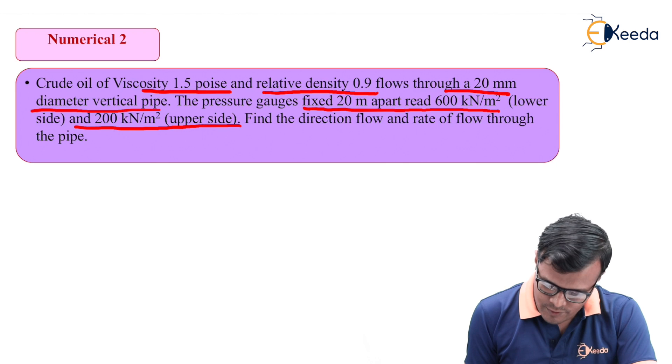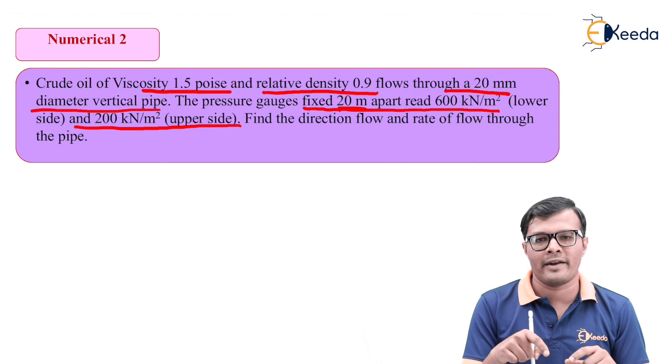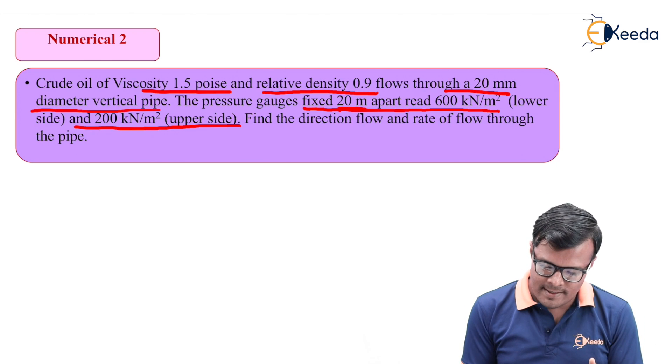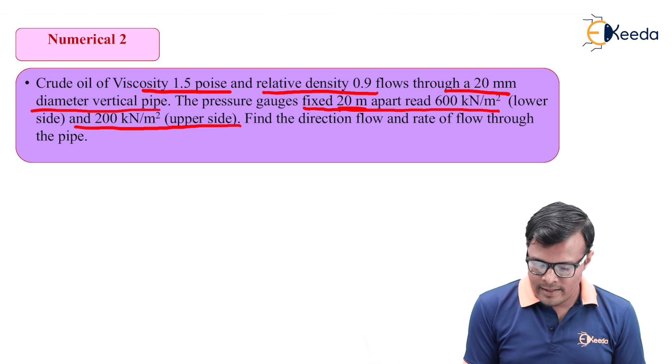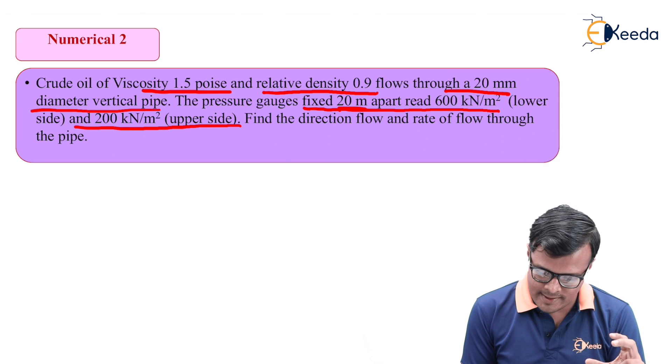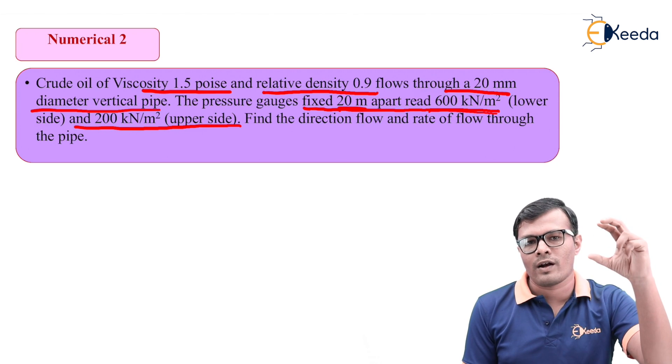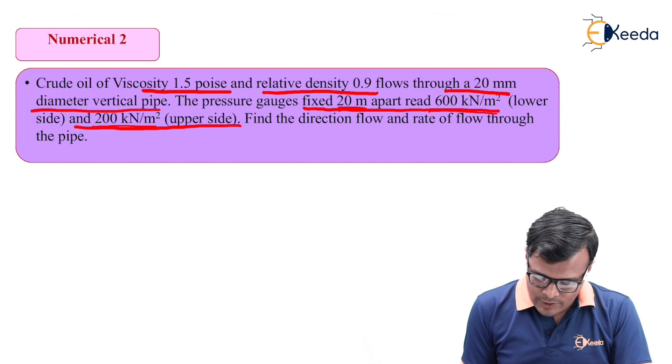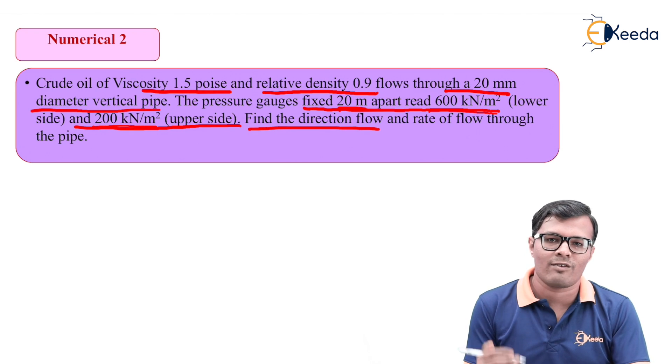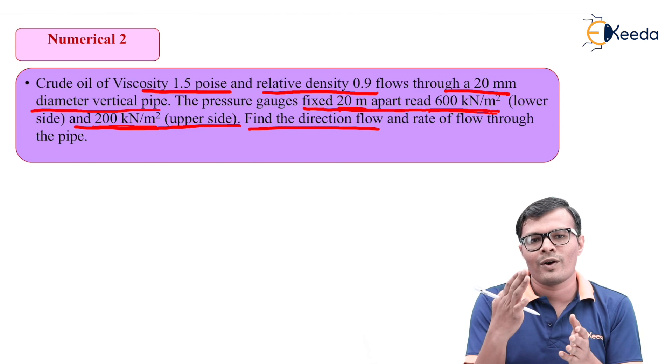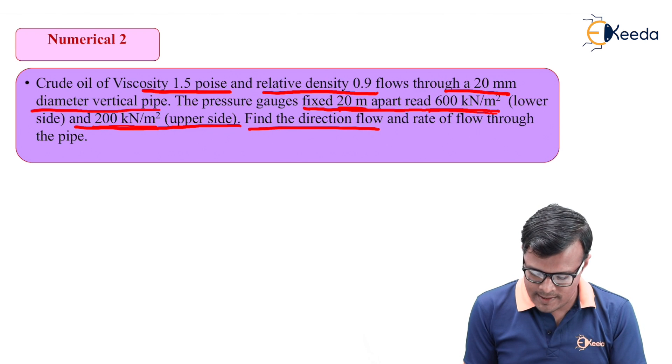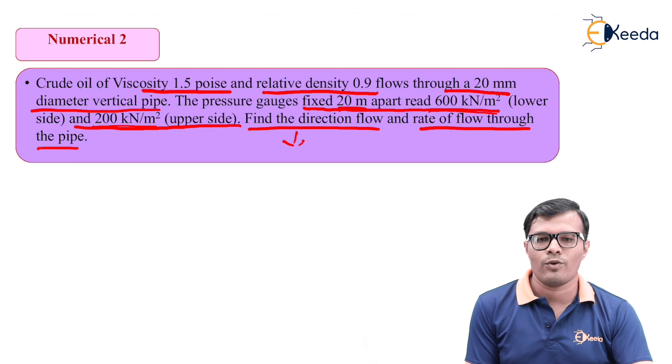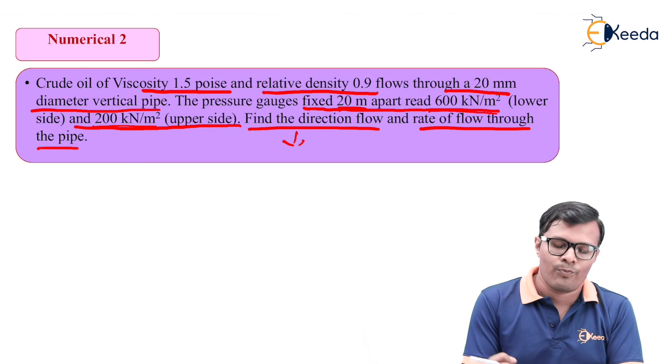At a distance of 20 meters, this vertical height has two gauges - pressure measuring devices giving us readings of 600 kN per meter square at the lower level and 200 kN per meter square at the upper level. Find the direction of flow - whether flow is moving from downward to upward or upward to downward - and the rate of flow through the pipe, meaning the rate of that flow. That is what is asked in the problem.